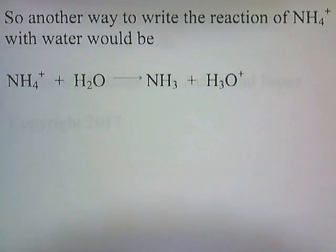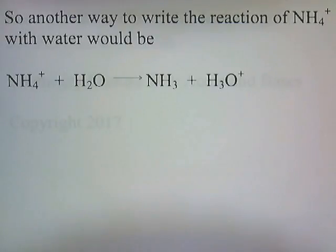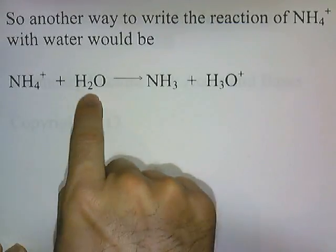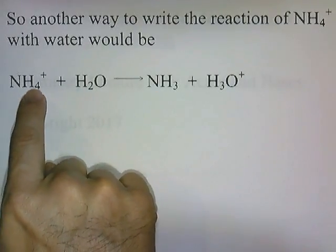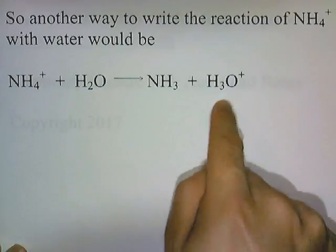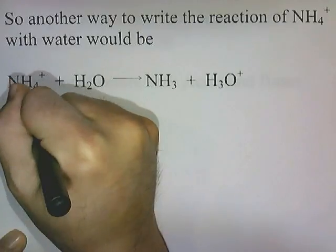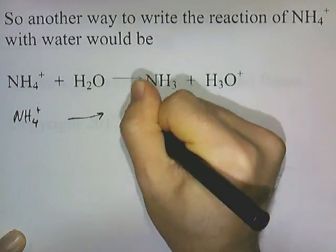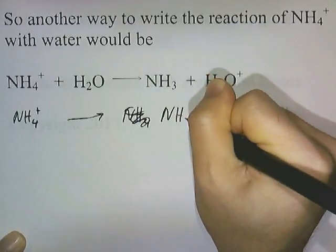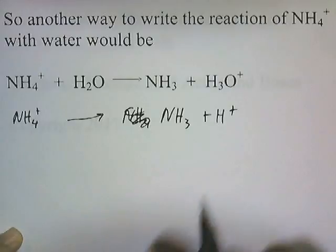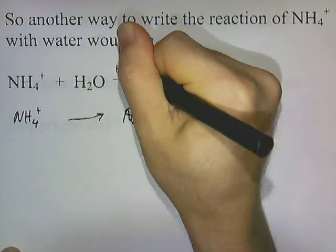Another way to write the reaction of ammonium with water would be: NH4 + H2O → NH3 + H3O+. The NH4 donates H+ to H2O to form H3O+. These two representations mean the same thing, as long as both occur in a water solution.